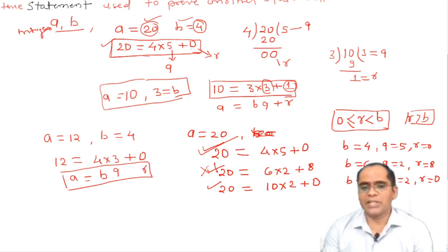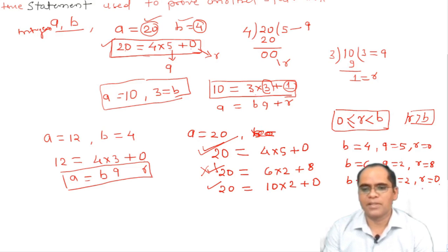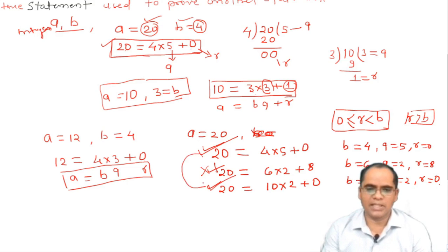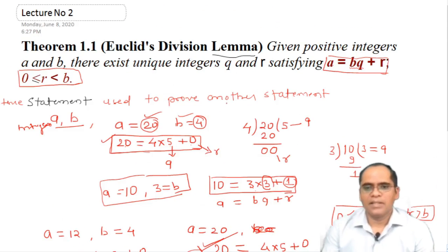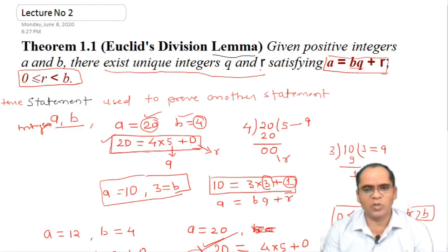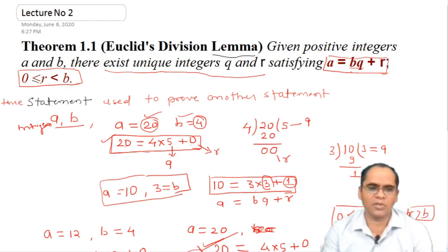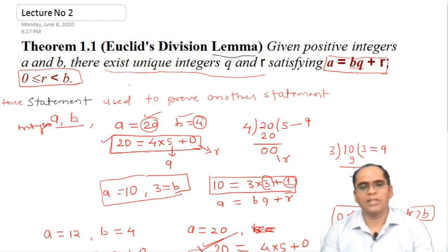Checking the third case: r = 0, so r ≥ 0 is satisfied, and r < b since 0 < 10 — this also satisfies Euclid's Division Lemma. So the first and third cases satisfy the lemma, and the second does not. The statement says: given positive integers a and b, there exist unique integers q and r satisfying a = bq + r, where r ≥ 0 and r < b.